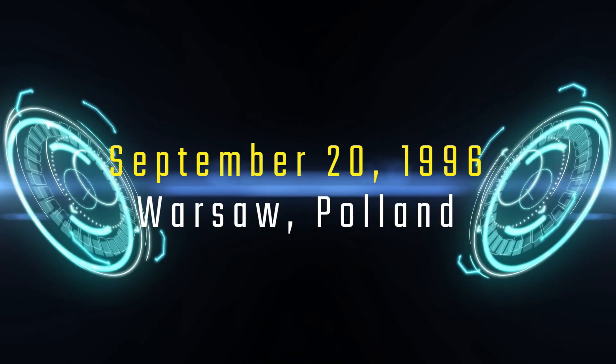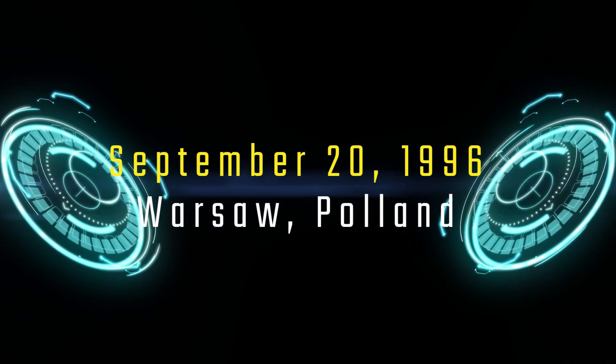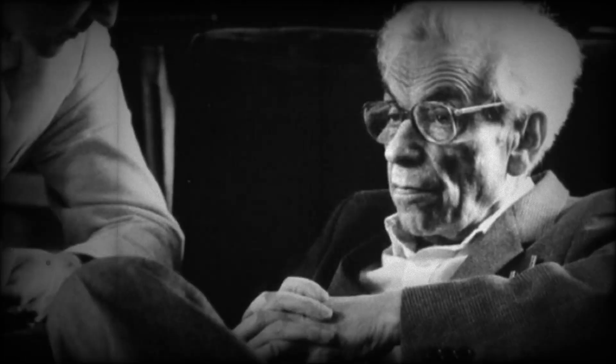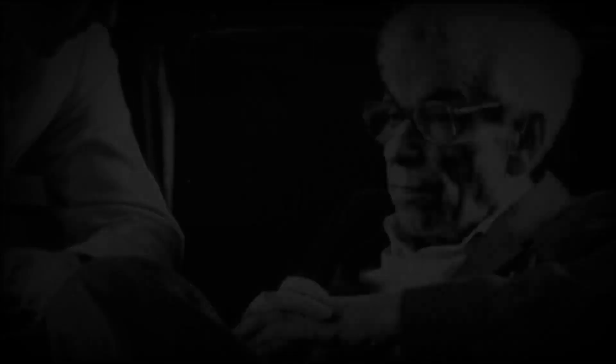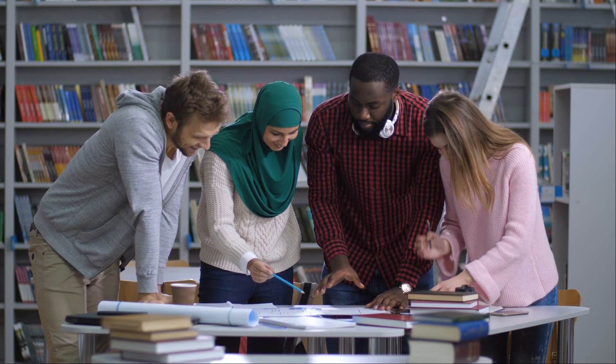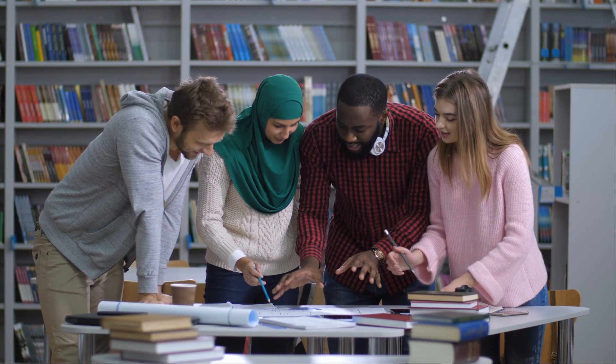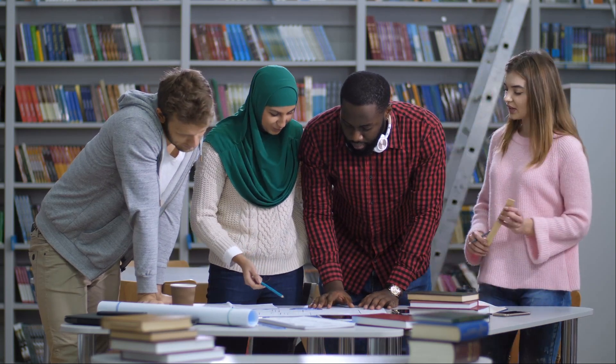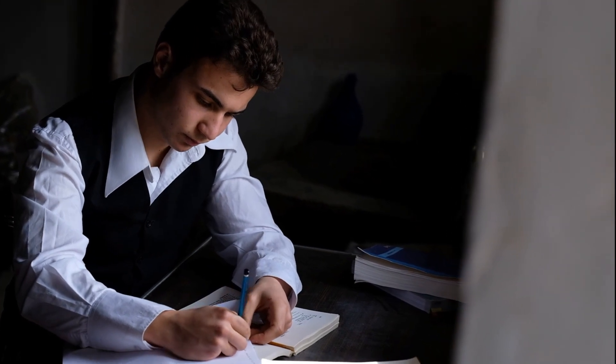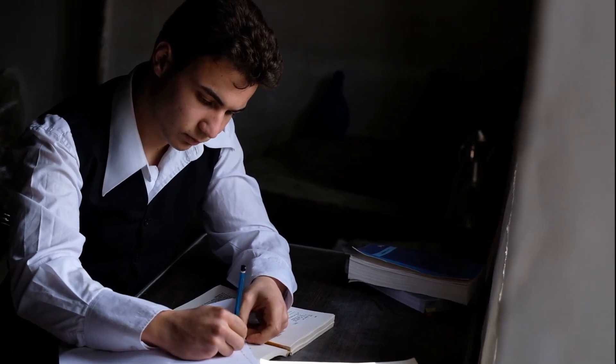On September 20th, 1996, Erdos attended yet another math conference. He did what he always did. Worked on problems, shared ideas, and chased numbers. And then just like that, he was gone. But Erdos didn't really die. Because the ideas he left behind, the problems he posed, and the collaborations he inspired, they're still alive today. His Erdos number continues to connect mathematicians across the world. His theorems continue to shape modern science. And somewhere in some notebook, a young mathematician is still searching for the perfect proof. Maybe even one from the book.